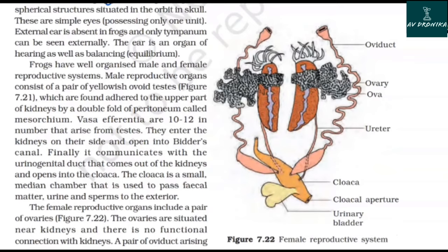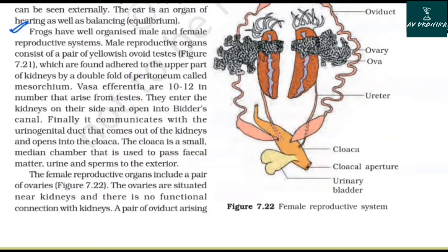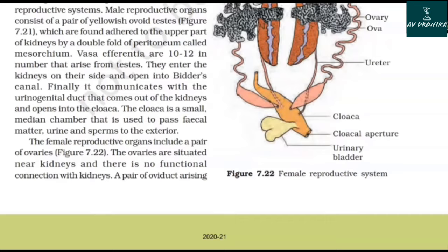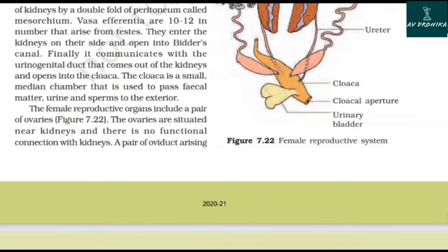Frogs have well-organized male and female reproductive systems. The male reproductive organs consist of a pair of yellowish ovoid testes attached to the upper part of the kidneys by a double fold of peritoneum called mesorchium. Vasa efferentia, 10 to 12 in number, arise from the testes, enter the kidneys on their side, and open into Bidder's canal, which communicates with the urinogenital duct that comes out of the kidneys and opens into the cloaca. The cloaca is a small median chamber used to pass fecal matter, urine, and sperms to the exterior.